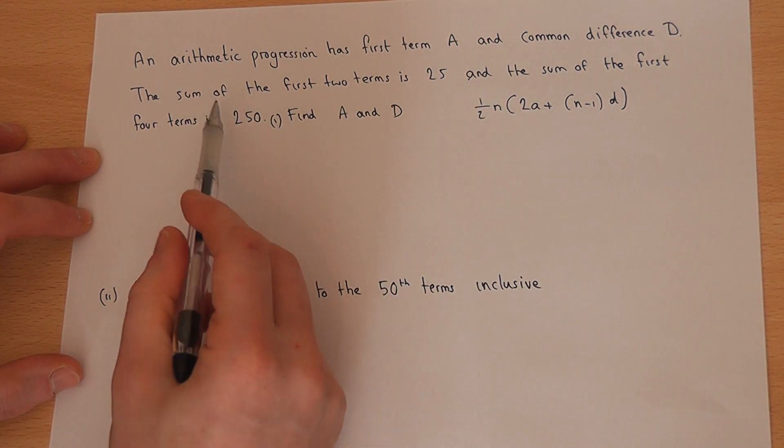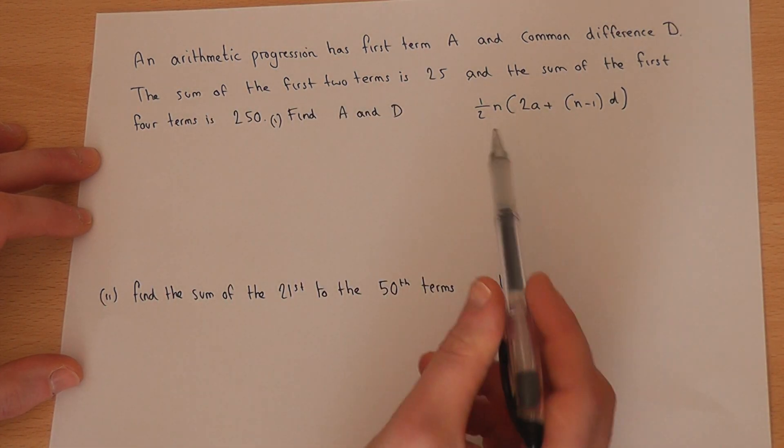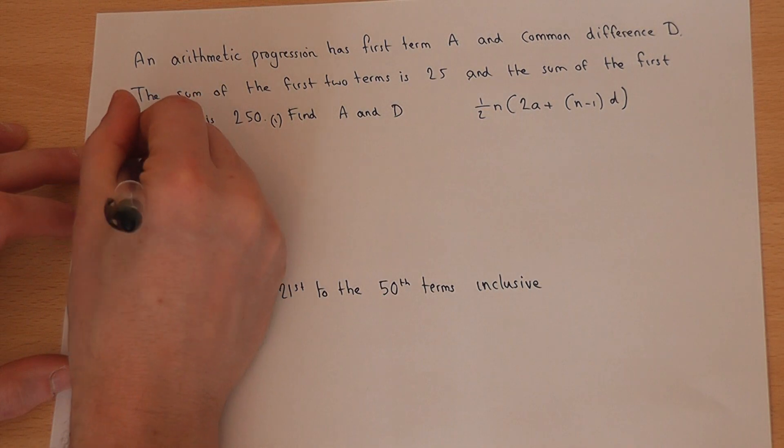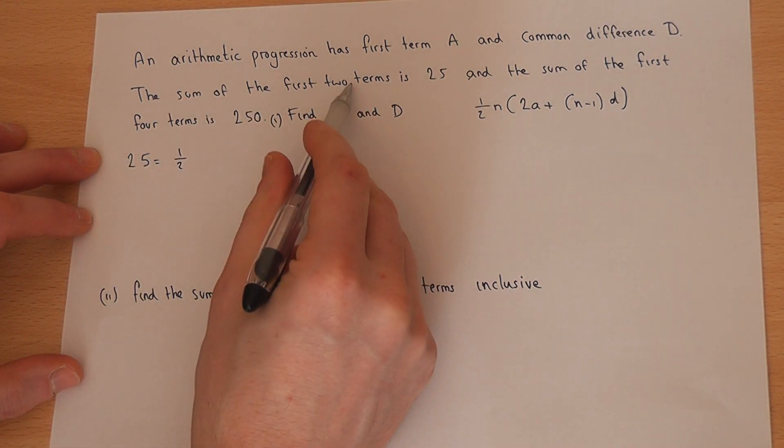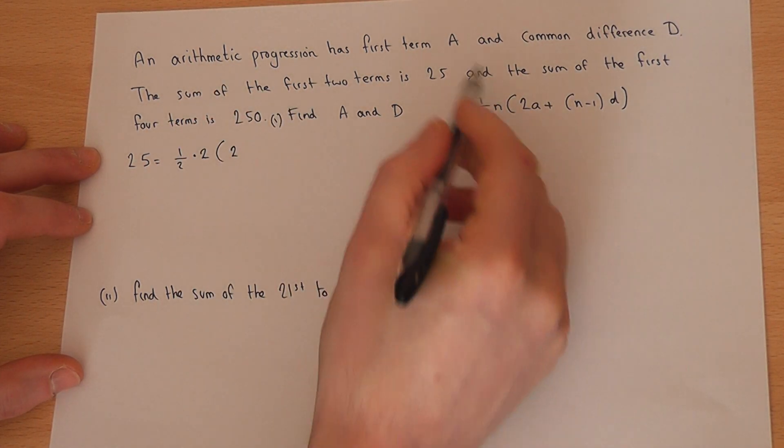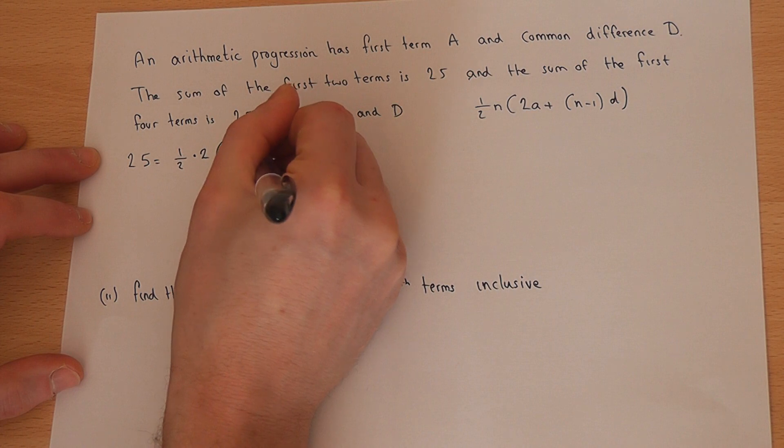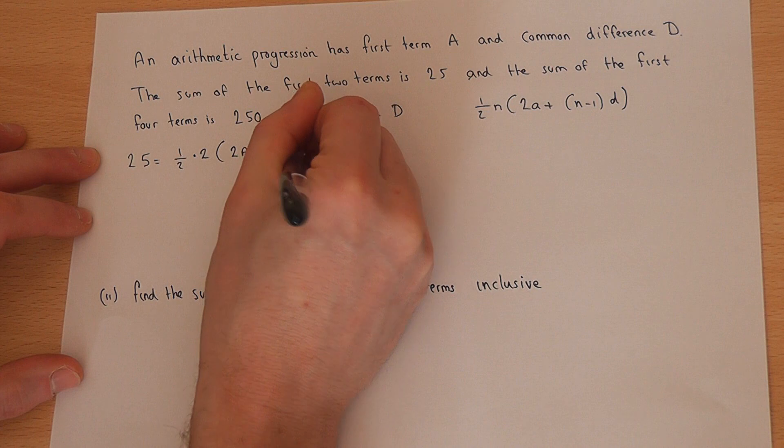So if we're told the sum of the first two terms is 25, then this means that 25 is 1 half, we've got two terms, so a half times 2, two lots of a, plus n is still 2, so 2 take 1 is 1, plus one lot of d.